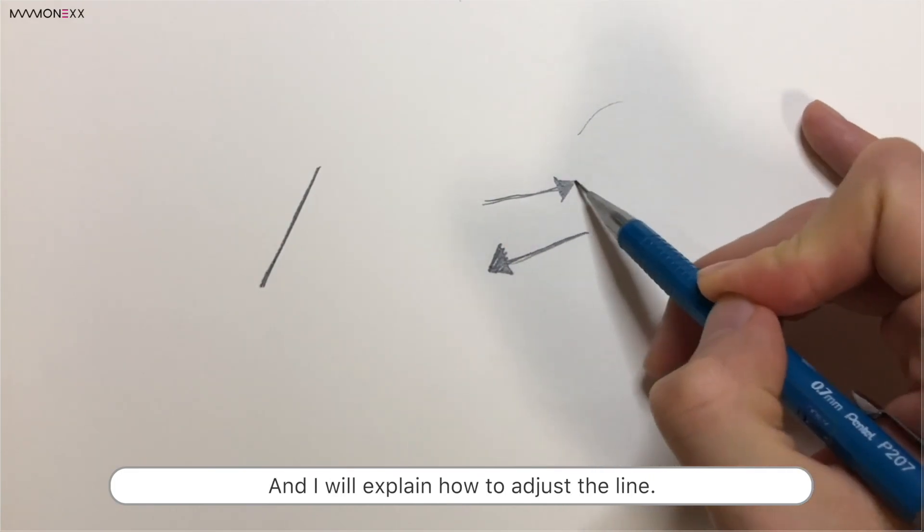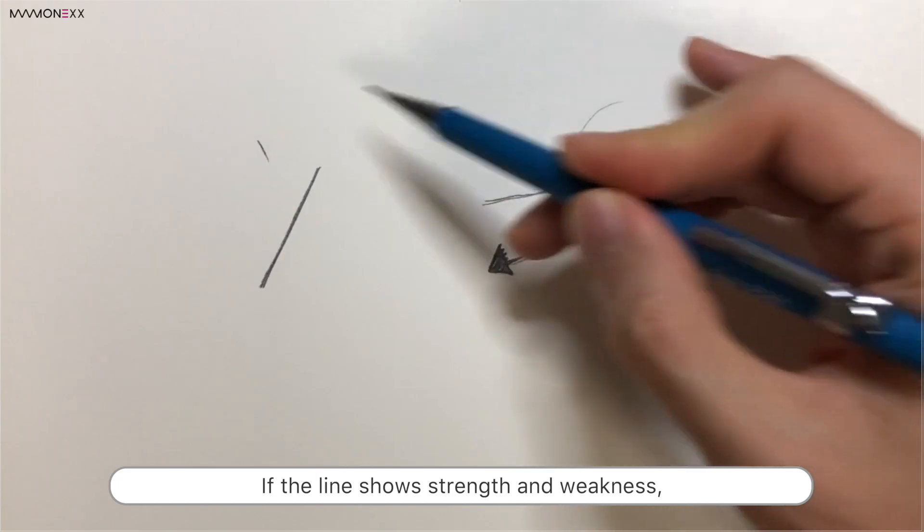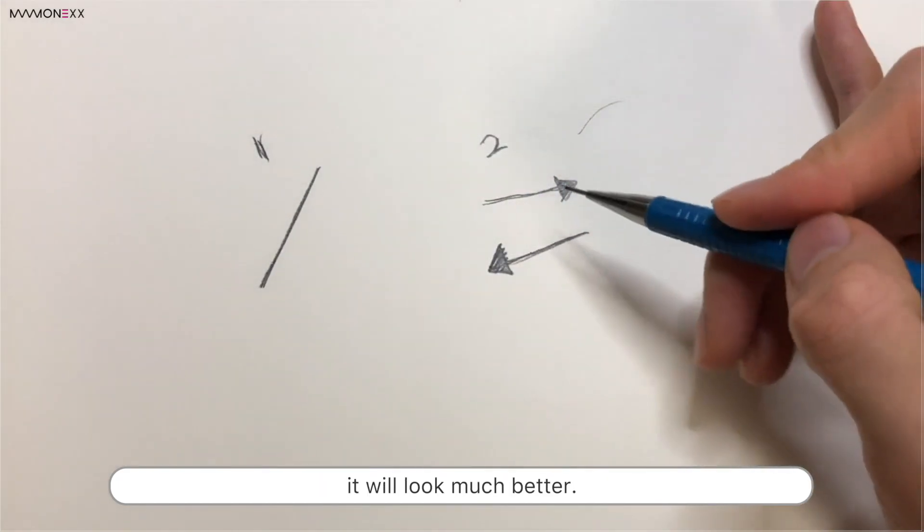And I will explain how to adjust the light. If the line shows strength and weakness, it will look much better.